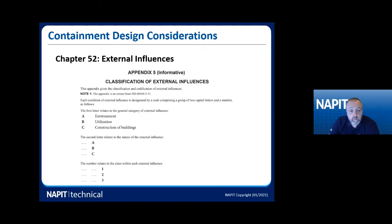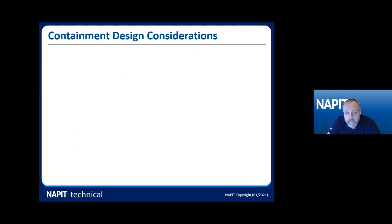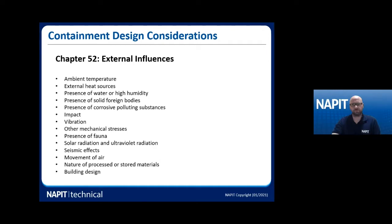The number will pertain to a particular requirement. For ambient temperature, the number gives an indication of a temperature or thermal band required. For 'D' — water — it will indicate droplets, jets, or whatever is needed, which we then convert into something else. Paul is going to talk through what those external influences are from an IP perspective, because what we see in BS 7671 as a requirement equates to something else.